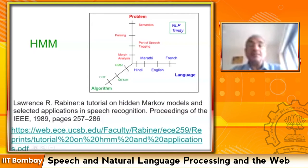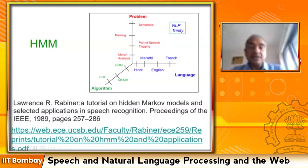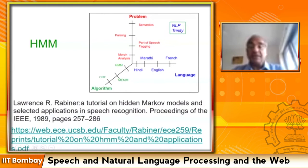The basic mechanism is the hidden Markov model. On the screen I have placed a very celebrated 1989 paper, relevant even now. One of the most highly cited papers, written by Lawrence Rabiner, this tutorial on hidden Markov models has been read by generations of students, researchers, and faculty members.